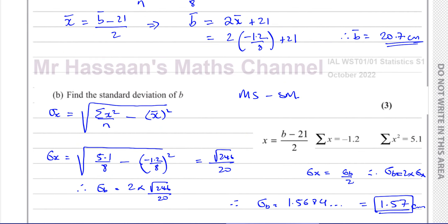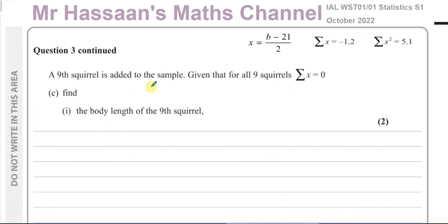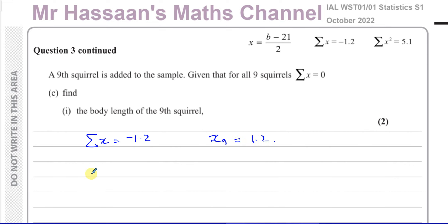Now we go on to part C. A ninth squirrel is added to the sample. Given that for all nine squirrels the sum of the coded values is zero, find the body length of the ninth squirrel. The sum of x for the original eight squirrels was minus 1.2. So the ninth x value must equal 1.2, because minus 1.2 plus the ninth term must equal zero.